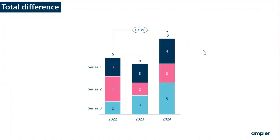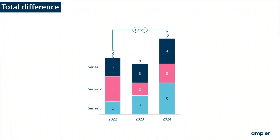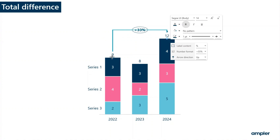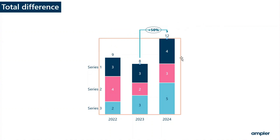To change the categories which are compared, simply drag the handles and the calculations will automatically update.